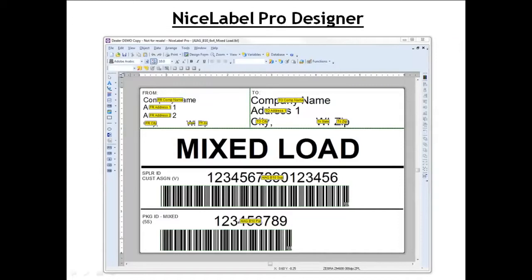Here's a screenshot of the NexLabel Pro interface. This is our main label designer that's used to create any type of label. You would first set up your label width and height, then add any text objects, barcodes, or variable fields that would be connecting to data from SAP. It's a very nice interface, Windows 8 compatible all the way down to Windows 2000, so it's a very flexible tool for any designer.